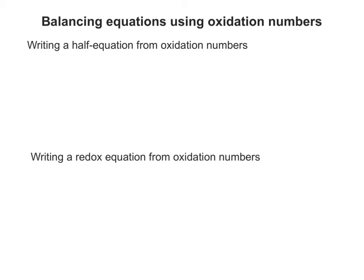The first one is writing a half equation from oxidation numbers, and the second one is writing a full balanced redox equation from oxidation numbers. So I'll take them one at a time.